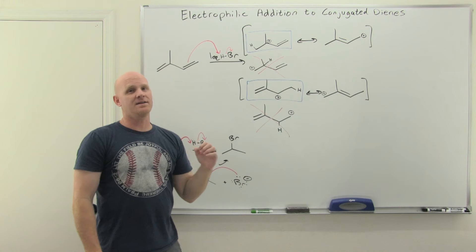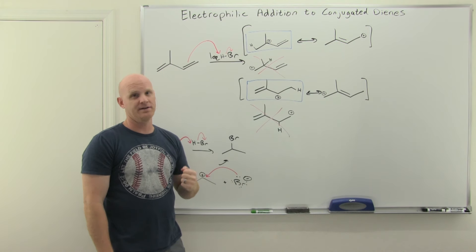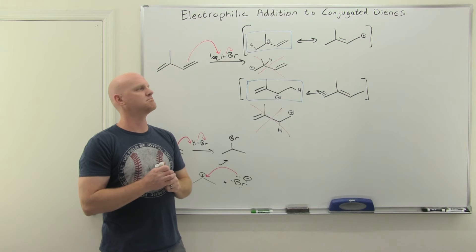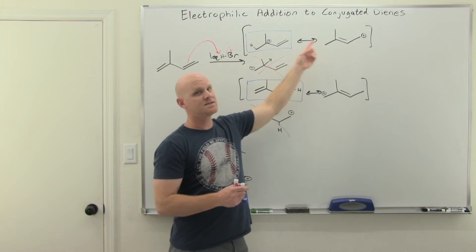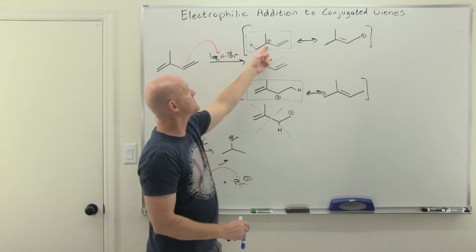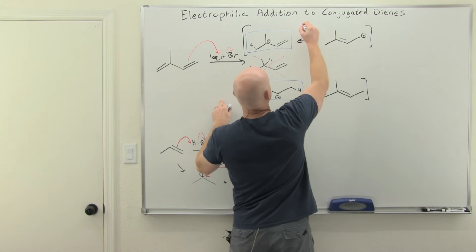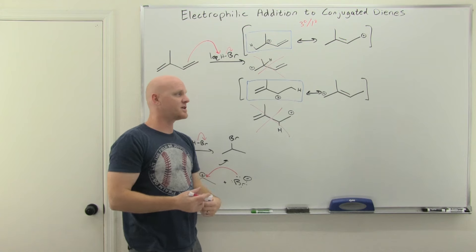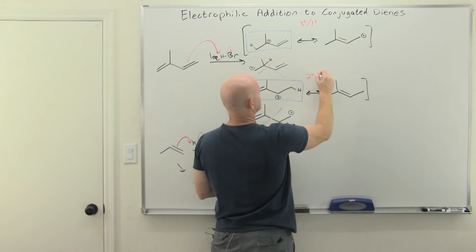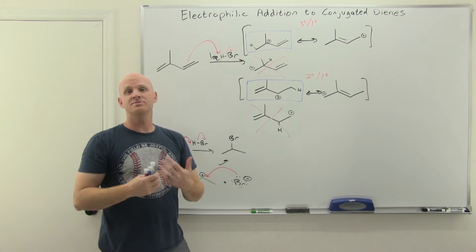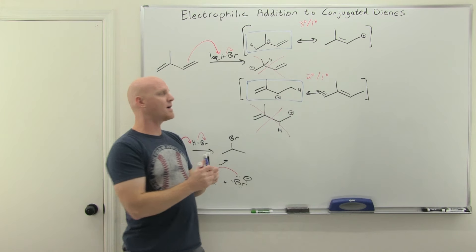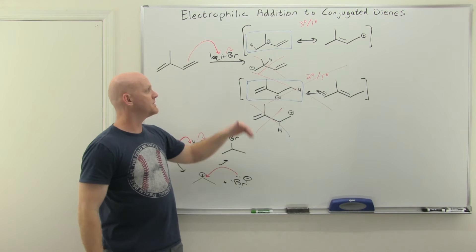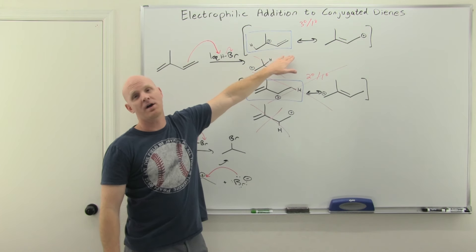Between the two resonance-stabilized carbocations, we still have to decide which is more stable, since the major product forms through the most stable carbocation. You can't just call one tertiary, because that structure doesn't really exist — what exists is the average of the two resonance structures. The positive charge is shared between two atoms, making it a tertiary-primary carbocation for one and a secondary-primary for the other. The tertiary-primary is more stable, so we've now ruled out the secondary-primary as leading to the major product.